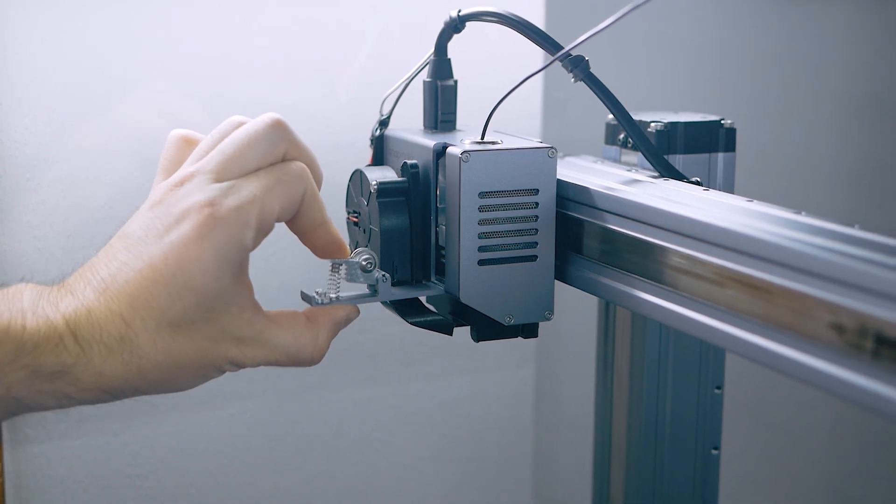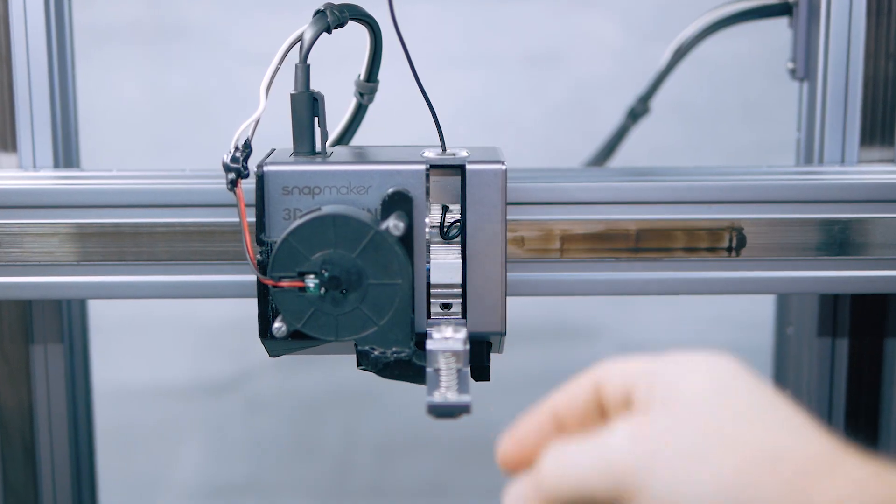Finally figured out that the extruder door spring was too strong for TPU filament and causing it to bend.